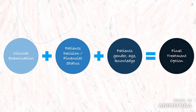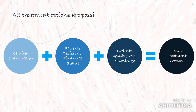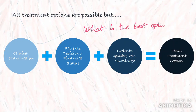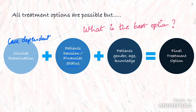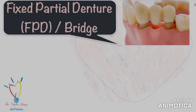Before I begin, we have to understand that each modality is a possible treatment option and has its own advantages and disadvantages. Among these options, how do we decide what is the best for the patient? There are several factors affecting the final treatment decision regarding the replacement of a missing tooth. These factors are case dependent. In many cases, if more than one treatment option is possible, the definitive replacement depends on the patient's final decision, their financial status, or is influenced by the patient's gender, age, and knowledge. Therefore, it is mandatory to understand the patient's needs and demands.